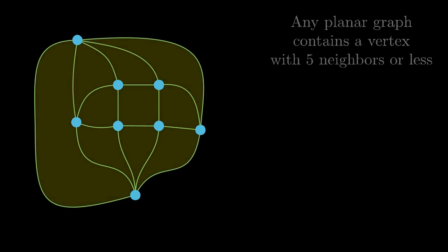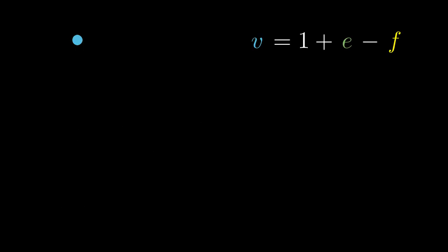There is a formula putting together the number of vertices, edges and faces in connected graphs, so called Euler's formula. It says that the number V of vertices can be calculated as 1 plus the number of edges E minus the number of faces F. We can easily verify that formula. It is true for a graph composed of 1 vertex. Indeed 1 vertex equals 1 plus 0 edges minus 0 faces.